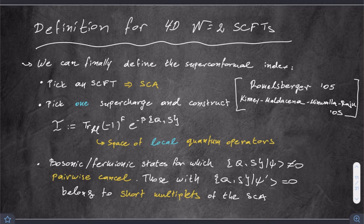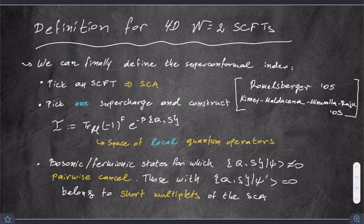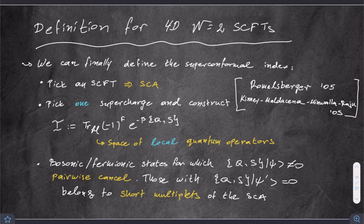Now we are finally at the stage where we can start talking about defining the index. The first thing to do is pick the superconformal field theory we're interested in, with its associated superconformal algebra. Then we pick one of the supercharges — one of the Poincaré generators — and construct the following quantity. As advertised earlier, this is a very similar expression to the Witten index, with the change that instead of having Q, Q-bar which was Q-dagger, we have Q, S because we're working in the Euclidean version where Q-dagger is S.